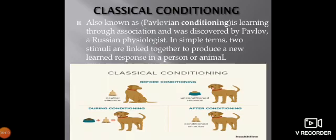Classical conditioning, also known as Pavlovian conditioning, is learning through association. It was discovered by Pavlov, a Russian physiologist. In simple terms, two stimuli are linked together to produce a new learned response in a person or animal.